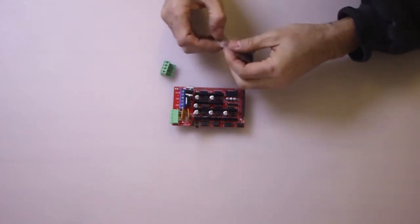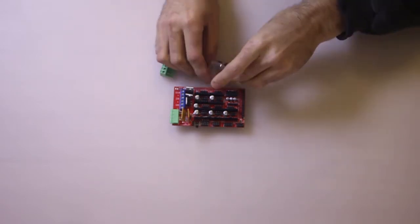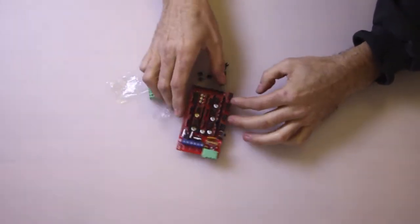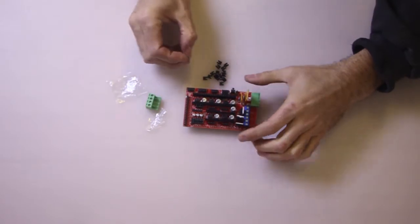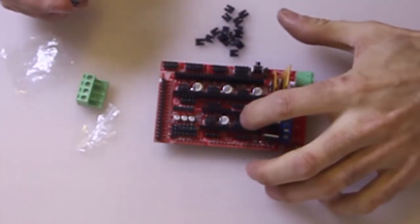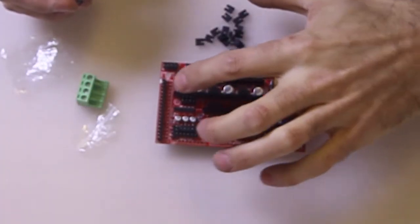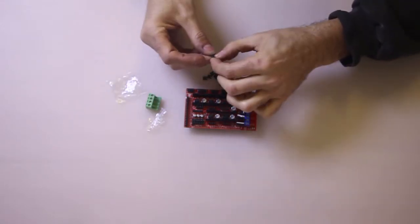We'll start by taking your jumpers out and we're going to populate all the jumpers for the stepping. Now these little sets of 3 pin headers here, there should be 5 of them. We're just going to populate them all with the little jumpers.